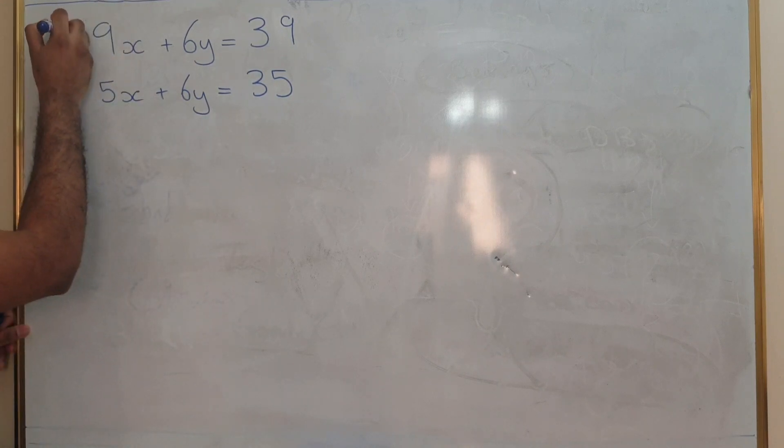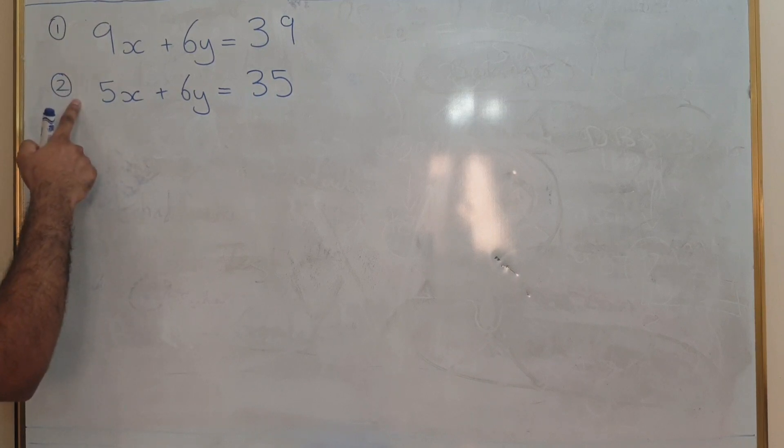First thing you need to do is label both equations. This is equation one, this becomes equation two.